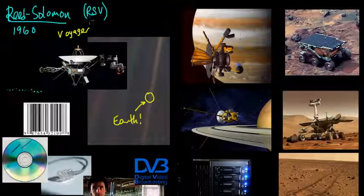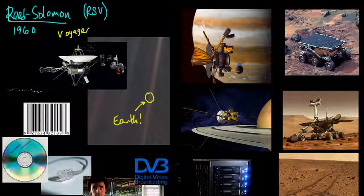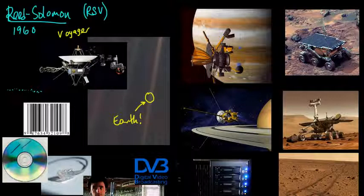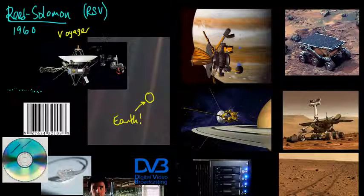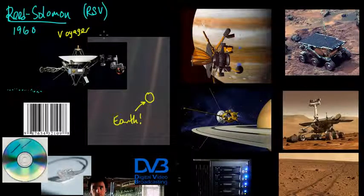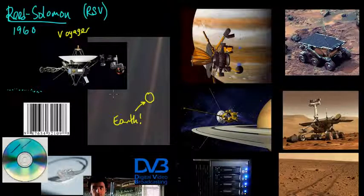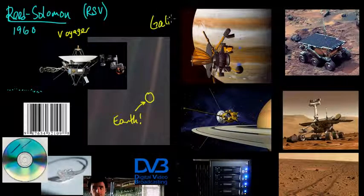Perhaps even more amazing, the Voyager probes are still alive and still sending back images. Just about a year ago one of them sent back a picture of the solar system. Voyager 1 is now 17 billion kilometers — around 11 billion miles — from Earth, and still using these amazing error correcting codes, they're able to send back pictures over those billions of miles.